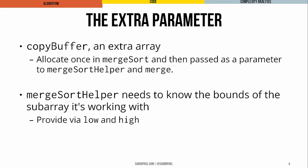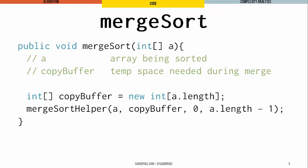Every time merge sort helper is called, it needs to know the bounds of the subarray it's working with. To do that, we use two parameters: low and high. We can start by looking at the code for the top-level method, merge sort, which clients will see. It takes a single parameter, A, which is the array we want to sort. Inside this method, we create a copy buffer the same length as A, and then call merge sort helper — our real workhorse — giving it A, the copy buffer, and the lower and upper bounds: zero and A.length minus one.